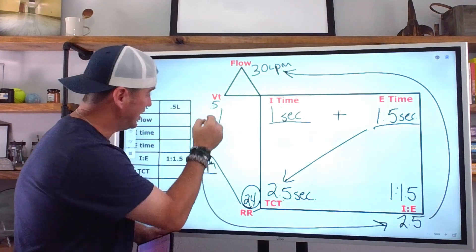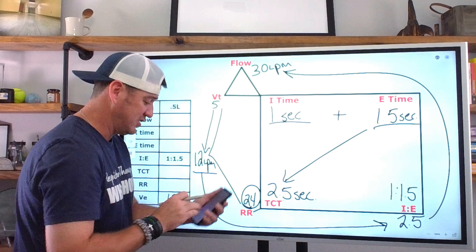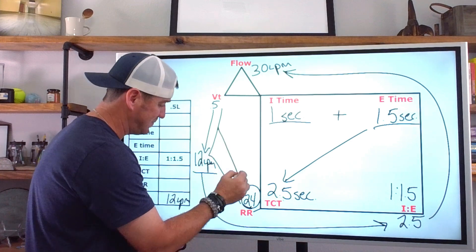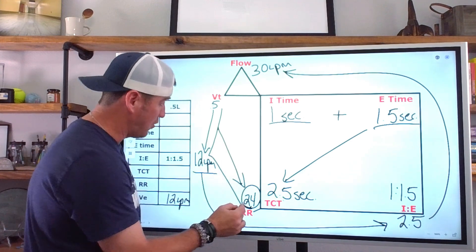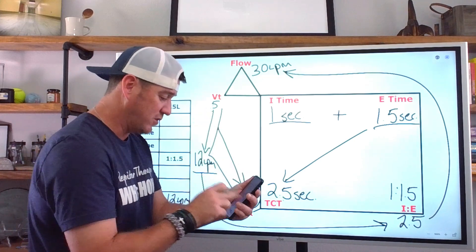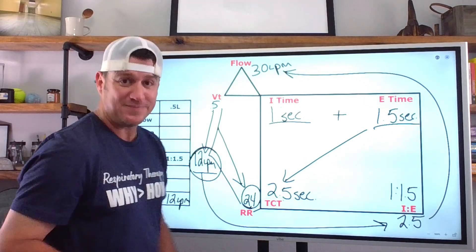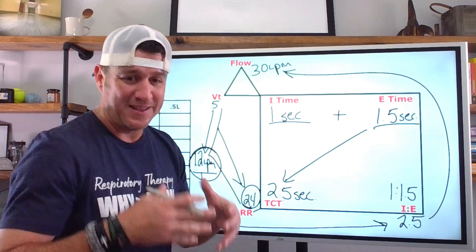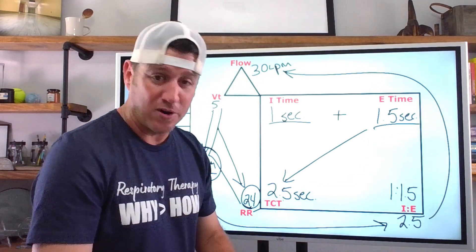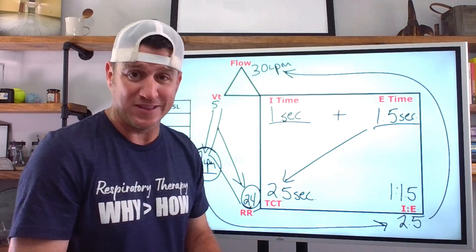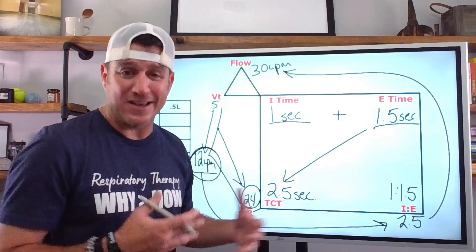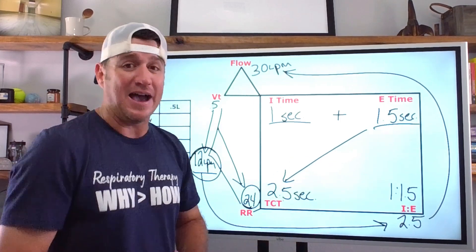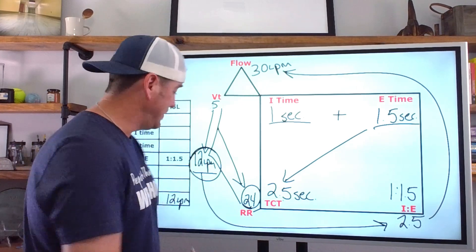We can double-check that multiple ways. If our minute ventilation is 12, then 12 liters per minute divided by 0.5 equals 24 — our respiratory rate. And 24 times 0.5 equals 12 — our minute ventilation. So many different ways to do this. When you understand how all of these things play together, you are a better, more well-rounded respiratory therapist. Stuff like this gets fun because you understand all the intricacies of what's happening between flow, I-time, E-time, total cycle time, and I-to-E ratio — and we can take better care of our patients.